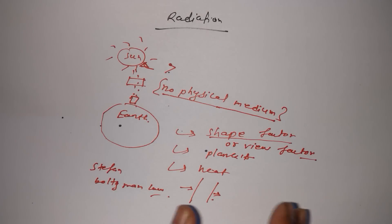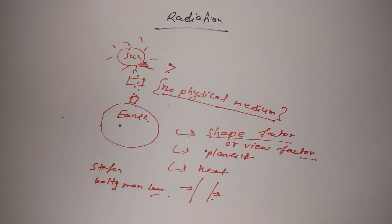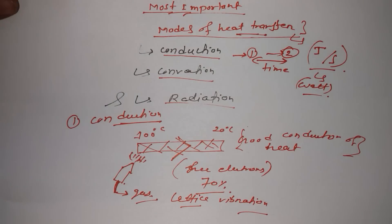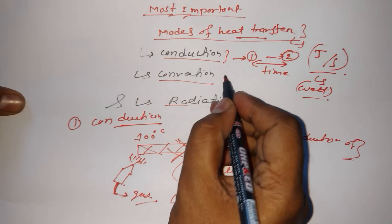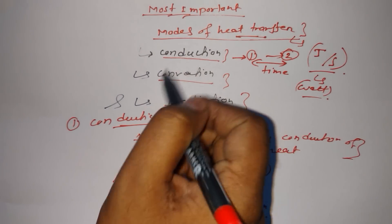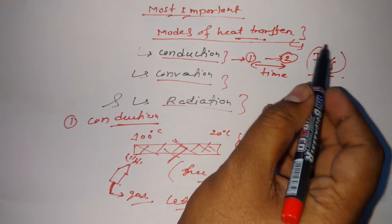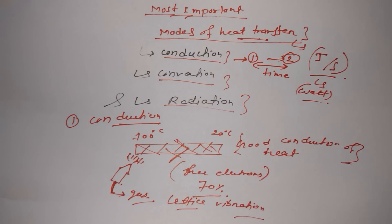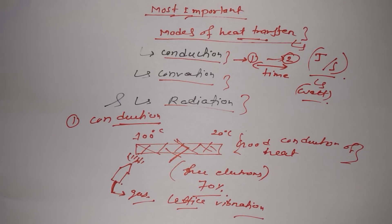So basically, in all these processes — conduction, convection, and radiation — we need to understand one thing: heat energy, measured in joules per second, is transferring from one place to another place with respect to time. That is most important to remember. We will understand all these things in detail in my next videos. Thanks for watching, see you soon, bye bye.